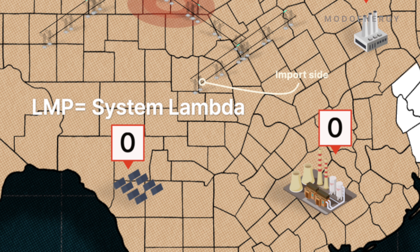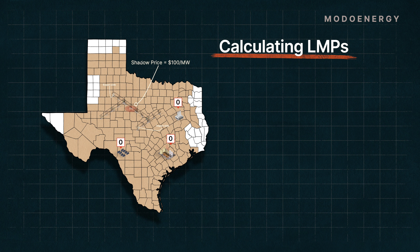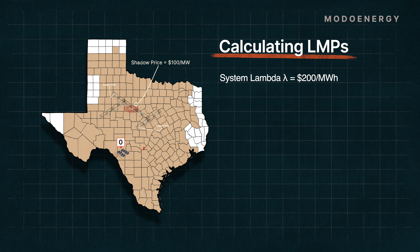For the vast majority of resources across ERCOT, this tends to be the case for a given constraint. To illustrate actually calculating LMPs, let's start by saying that the system lambda is $200 per MWh. This means that those resources with 0% shift factors will also have LMPs of $200 per MWh.